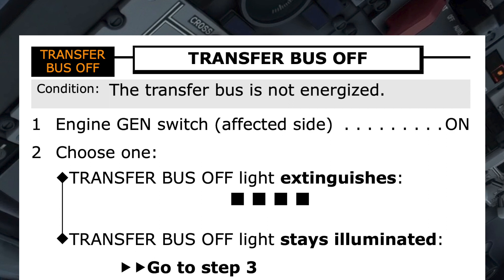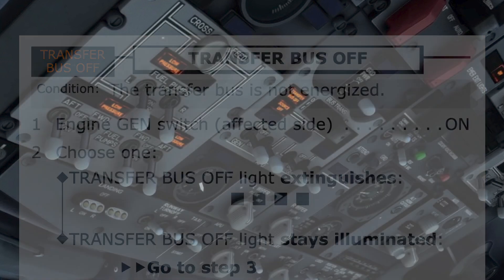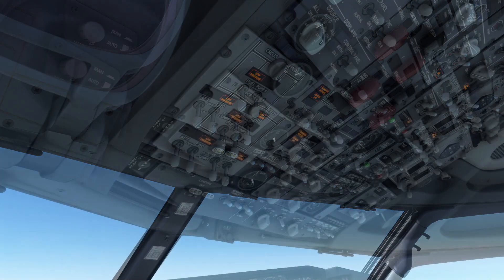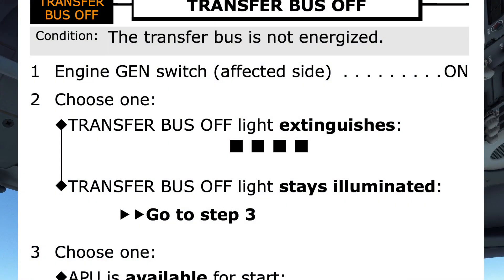The first step is for the engine generator switch on the affected side to be switched on. We saw the transfer bus off light on the left side, so we will make sure the generator switch on that side is switched on. Step 2 is conditional, depending on whether the transfer bus off light extinguished or not. Had the light extinguished when we put the generator switch to on, we'd choose the first path, which shows 4 black boxes indicating the checklist had been completed. However, the light stayed illuminated, so we choose the second option, which directs us to proceed to step 3.